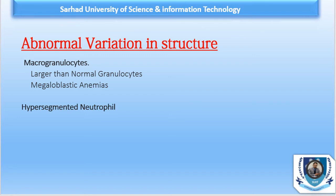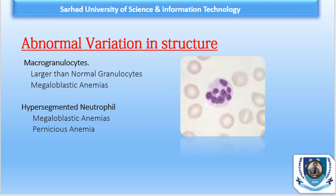Another abnormal type is hyper-segmented neutrophils. These polymorphonuclear neutrophils each have more than five lobes in their nucleus and are commonly encountered in megaloblastic anemia, pernicious anemia, and some other anemias. Not all neutrophils in a person with megaloblastic anemia will show hyper-segmentation, but in the majority of cases hyper-segmented neutrophils are found on the peripheral smear.